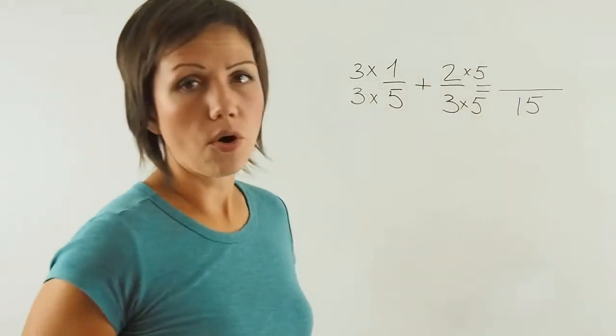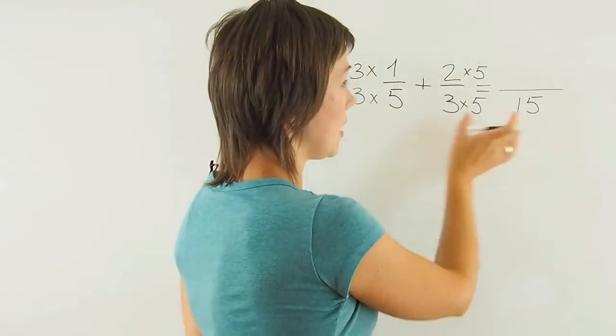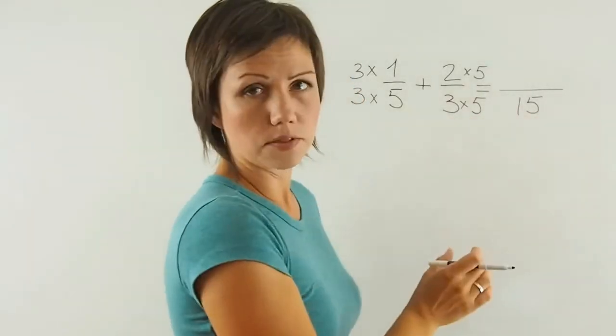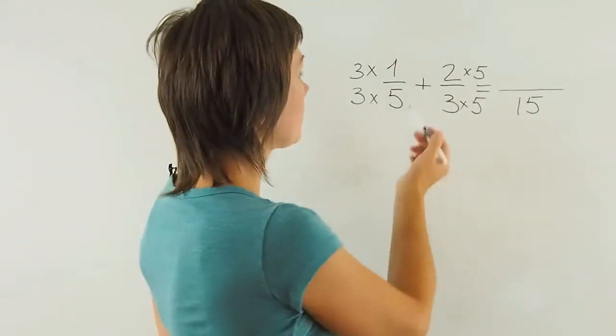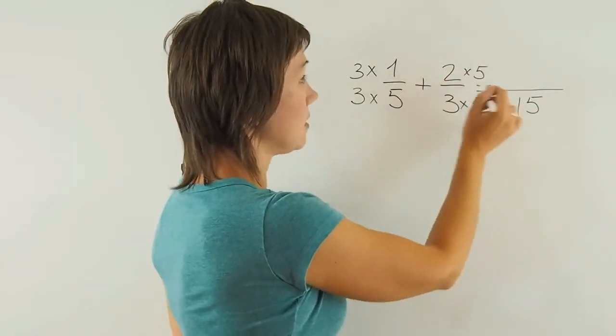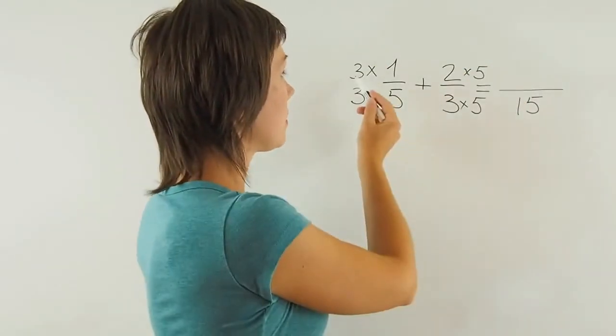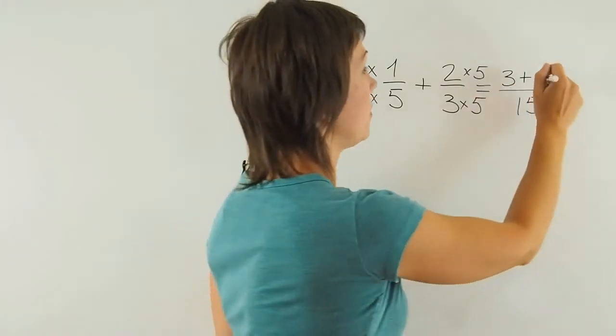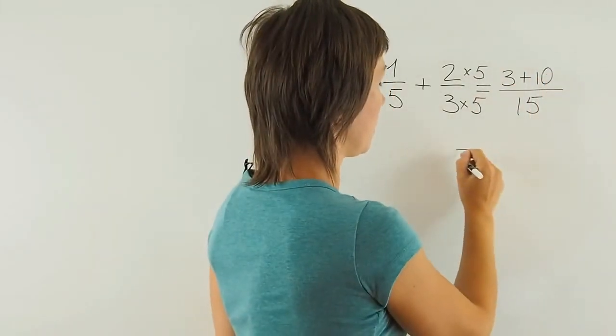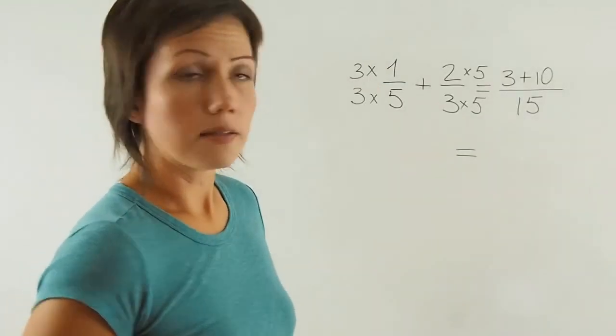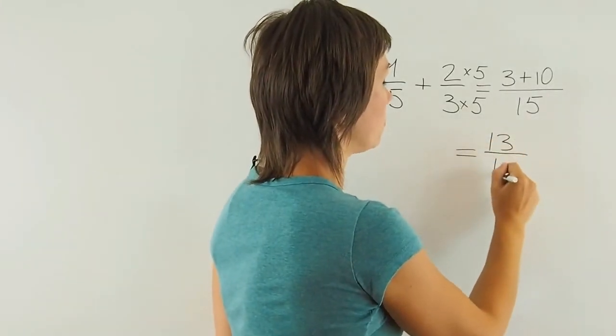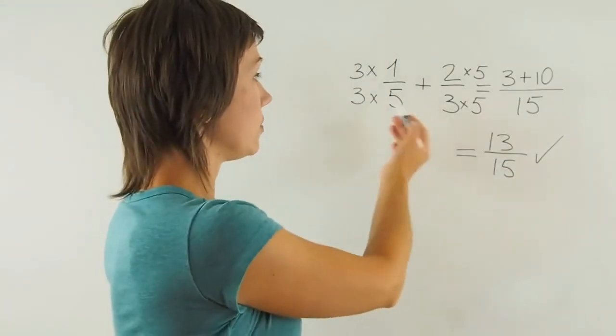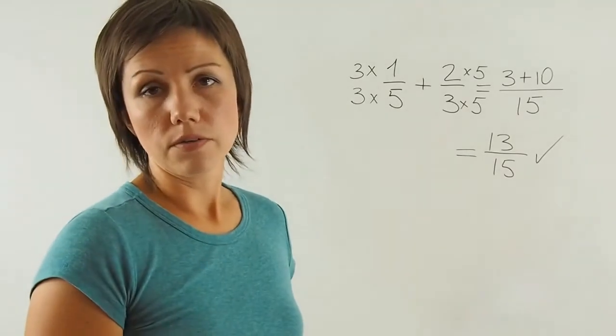15 is now the common denominator. And since I'll only have one fraction as the answer, as the sum, I only keep one denominator of 15. In the numerator, I will add these two products. 3 times 1 is 3 plus 2 times 5, which is 10. 3 plus 10 is 13 over 15. This is the sum of the following two fractions.